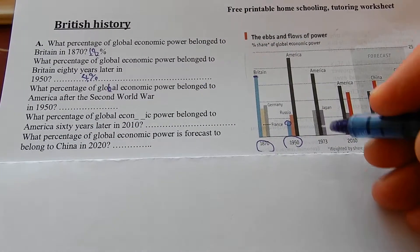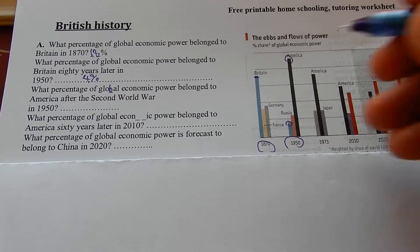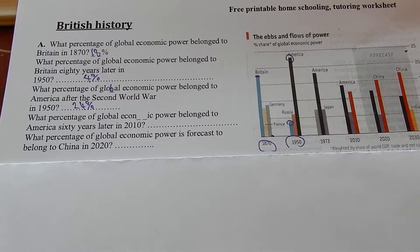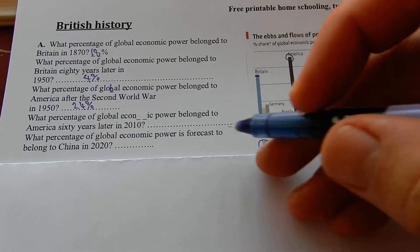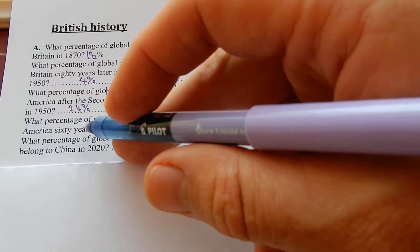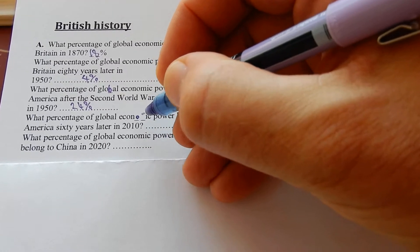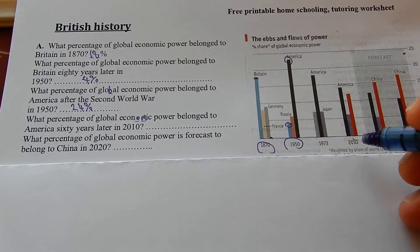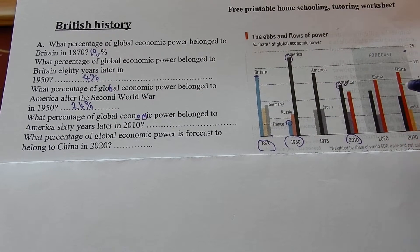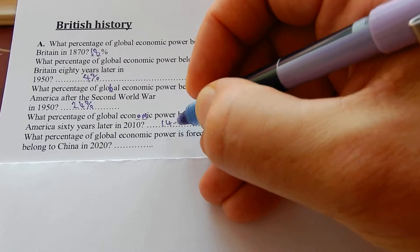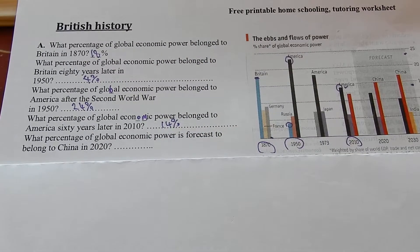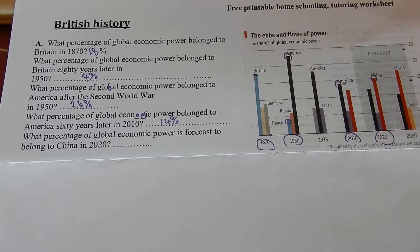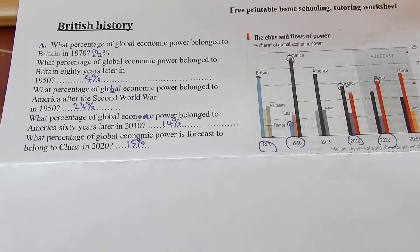After the Second World War, what percentage of global economic power belonged to America in 1950? America did very well — went up to 24% in 50 years. What percentage of global economic power belonged to America 60 years later in 2010? It's going down a little — 14%. What percentage is forecast to belong to China in 2020? 15% — China is where all the mobile phones are made.